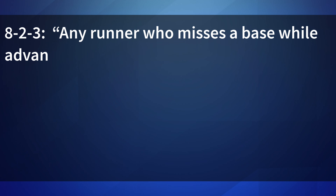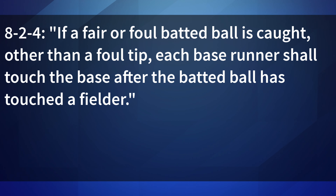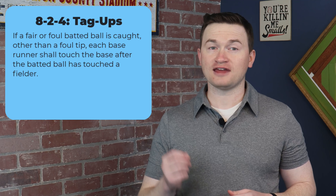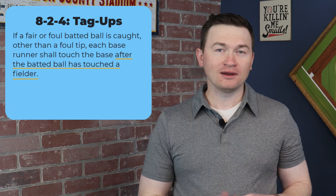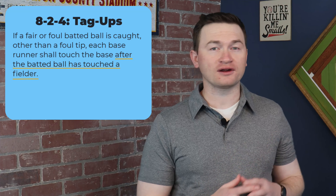Article 3: any runner who misses a base while advancing may not return to touch it after a following runner has scored. It's extremely unlikely you'd run into this on the bases, but it is noteworthy that it applies to the plate as well. Where you may see this is the first runner misses the plate, then the next runner slides in and scores, and then the first runner goes back to touch — that touch would be ignored. Article 4: if a fair or foul batted ball is caught other than a foul tip, each base runner shall touch the base after the batted ball has touched a fielder. We don't need a catch to be completed when determining when a runner can touch — simply as soon as it is touched by any fielder, the runner can touch and advance.